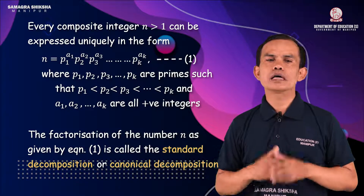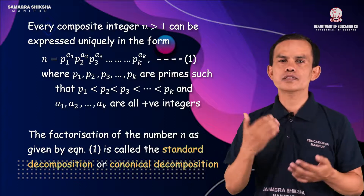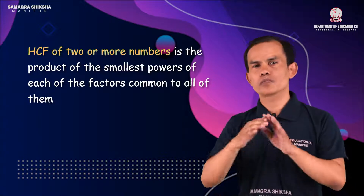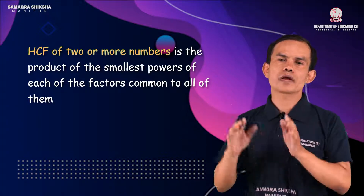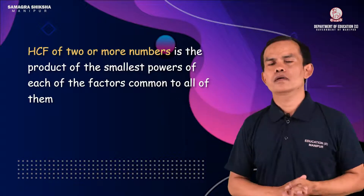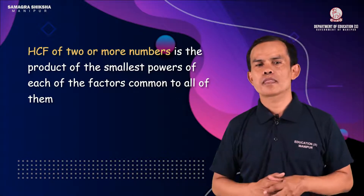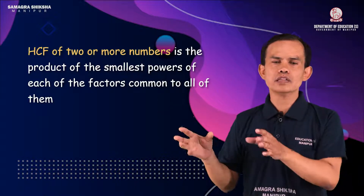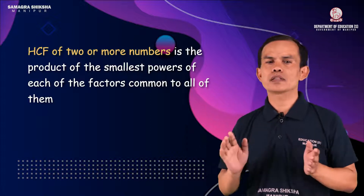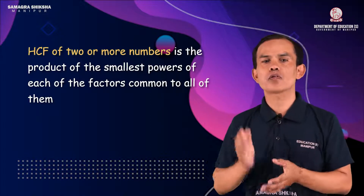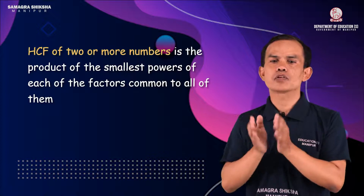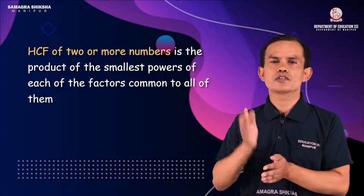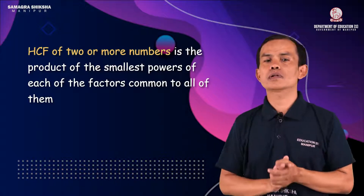Now we look at how to find HCF and LCM using canonical decomposition. The common prime factors are identified, and for the HCF we take the product of the smallest powers of those common prime factors.